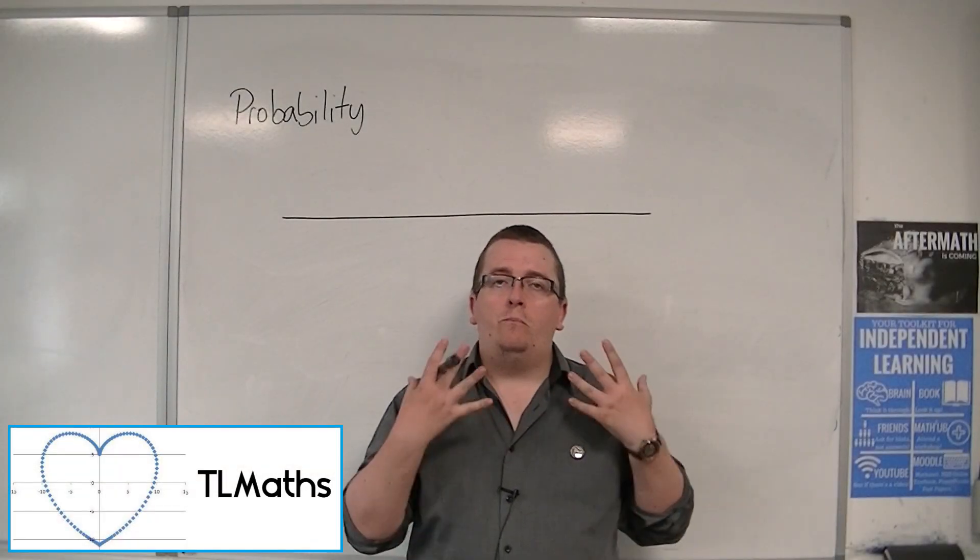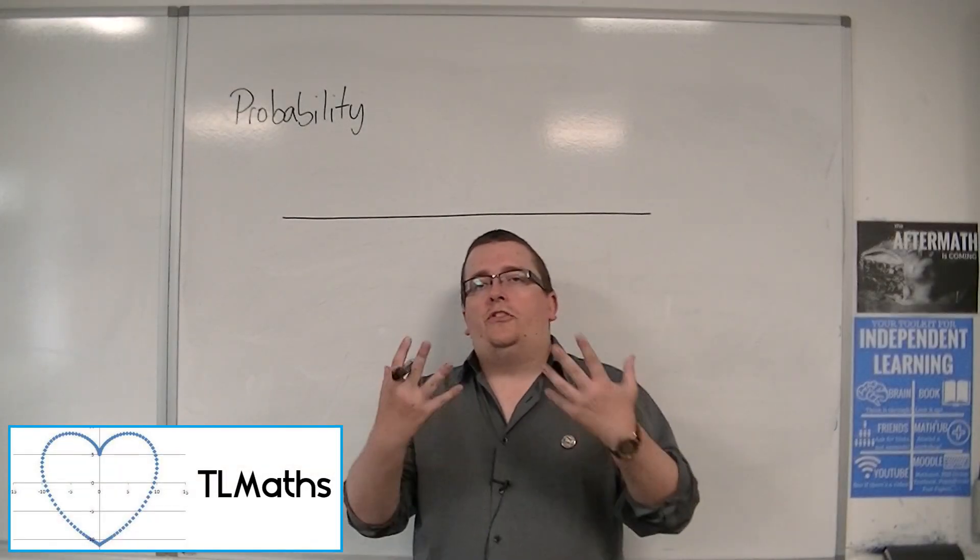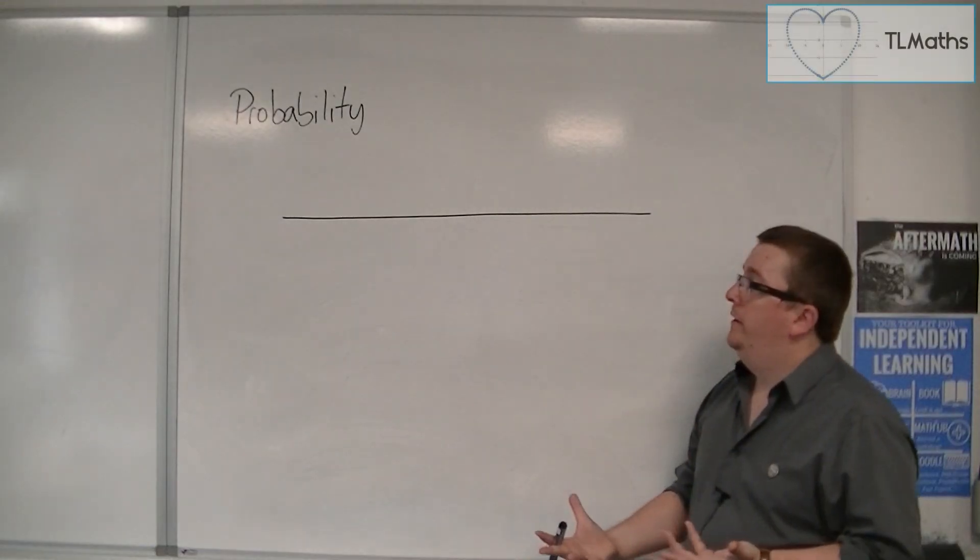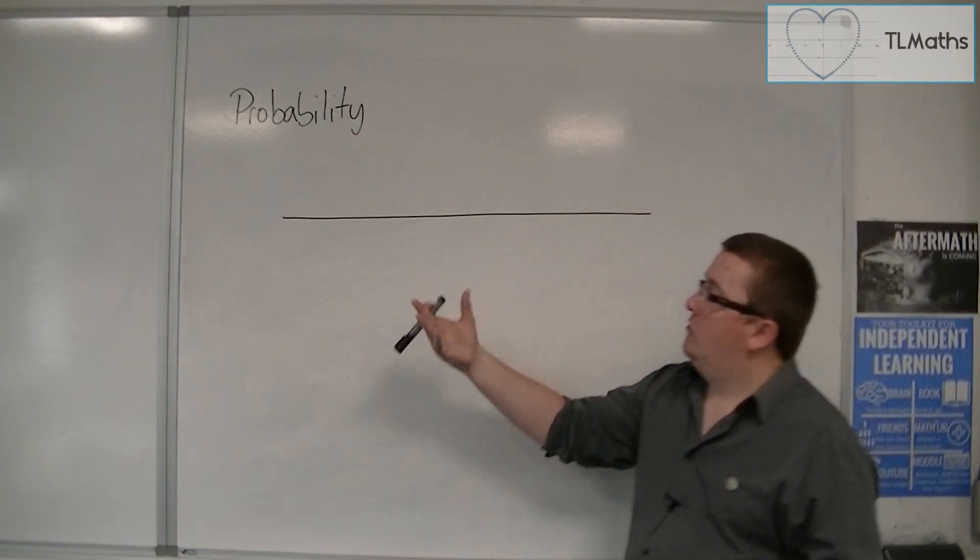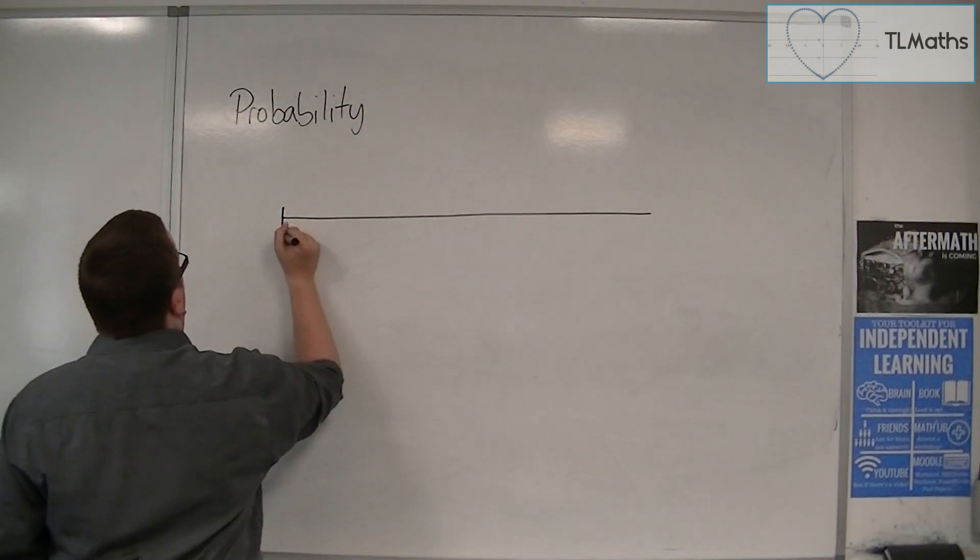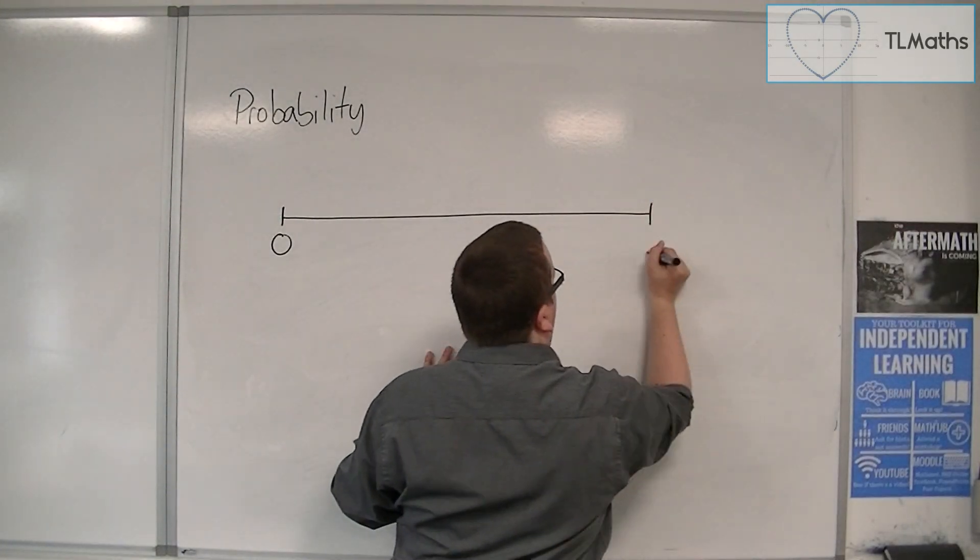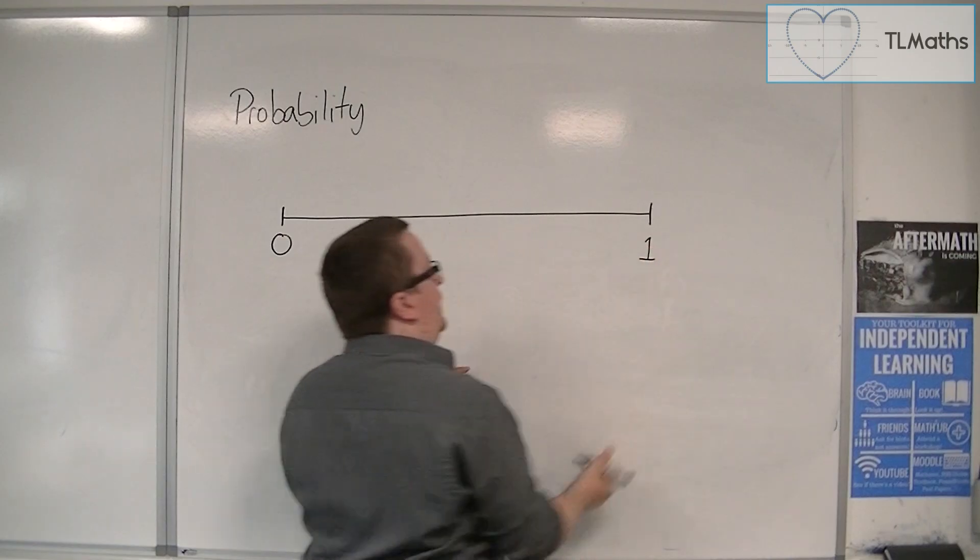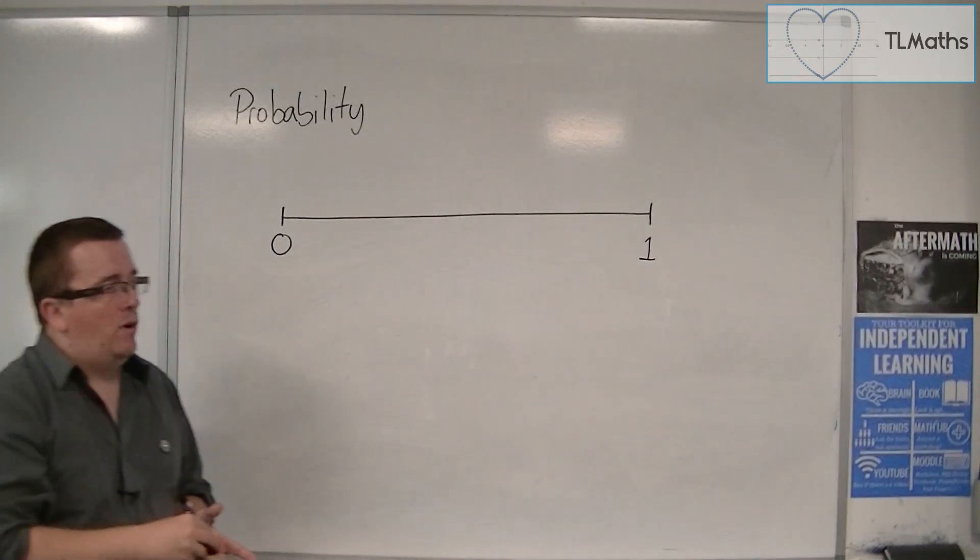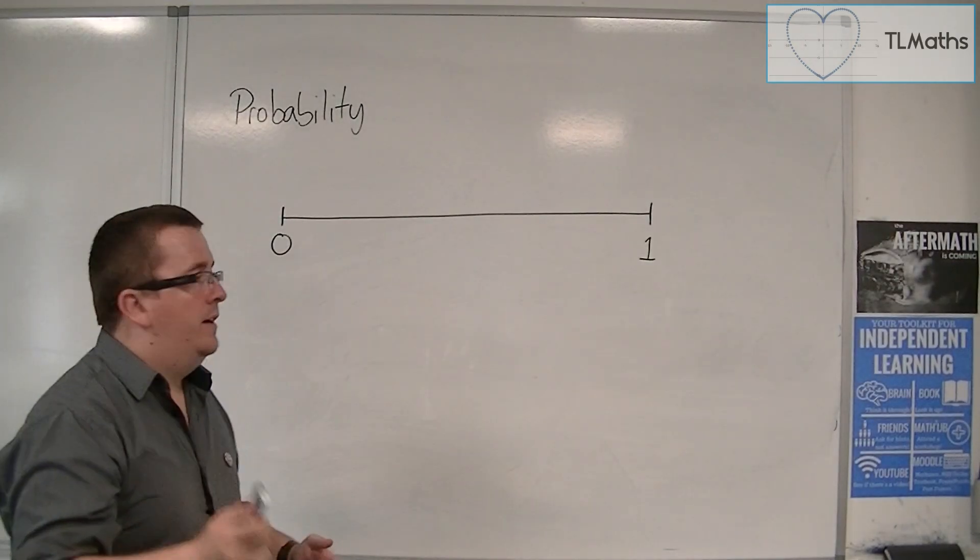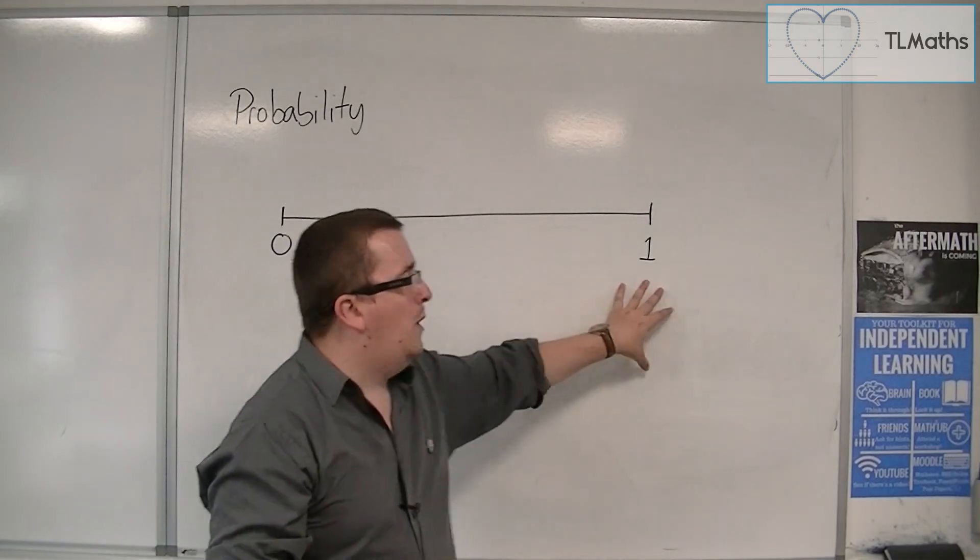The basic idea of probability is that we have a number line that goes from 0 all the way up to the number 1. And all probabilities occur between 0 and 1.